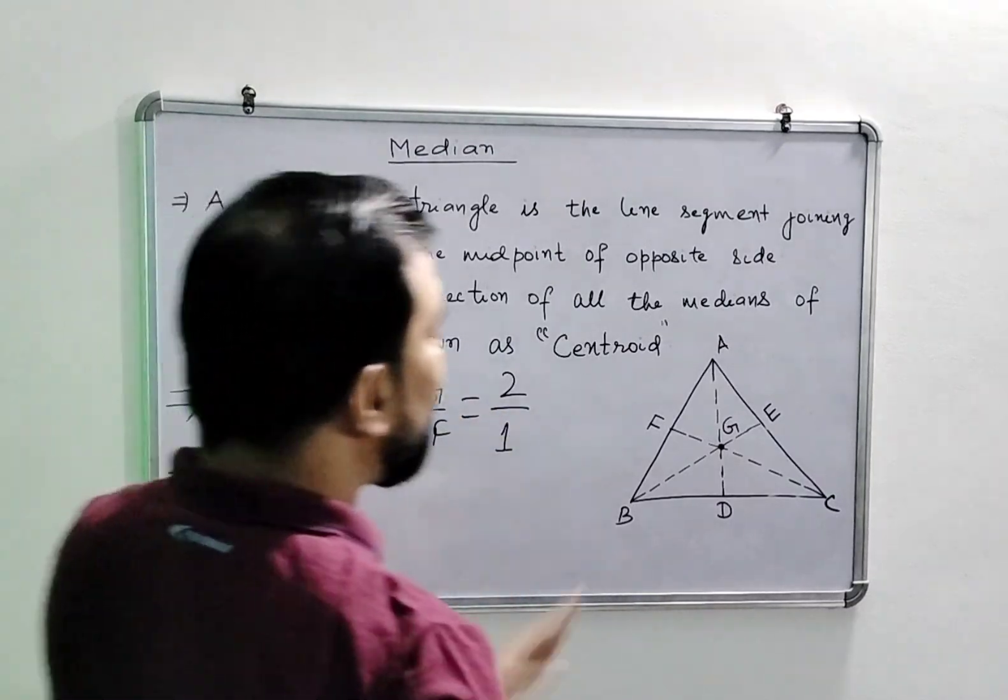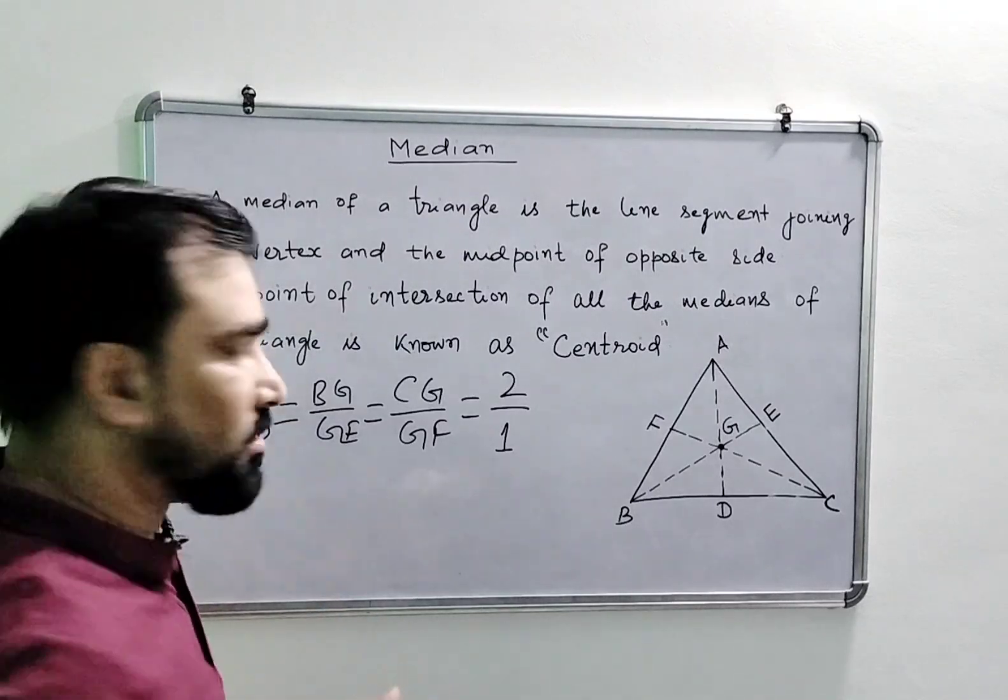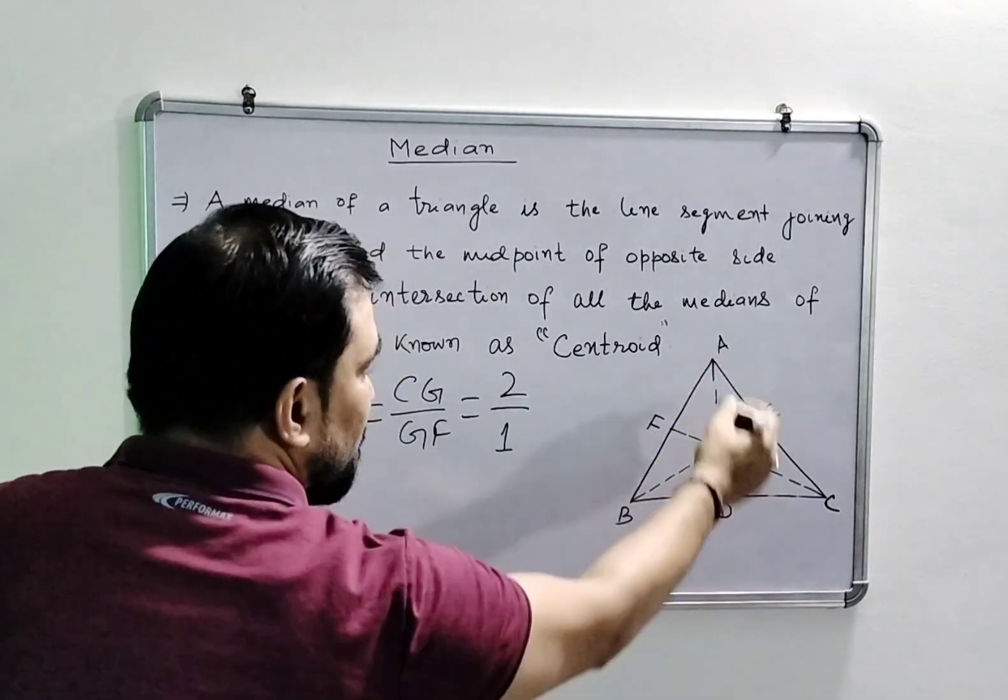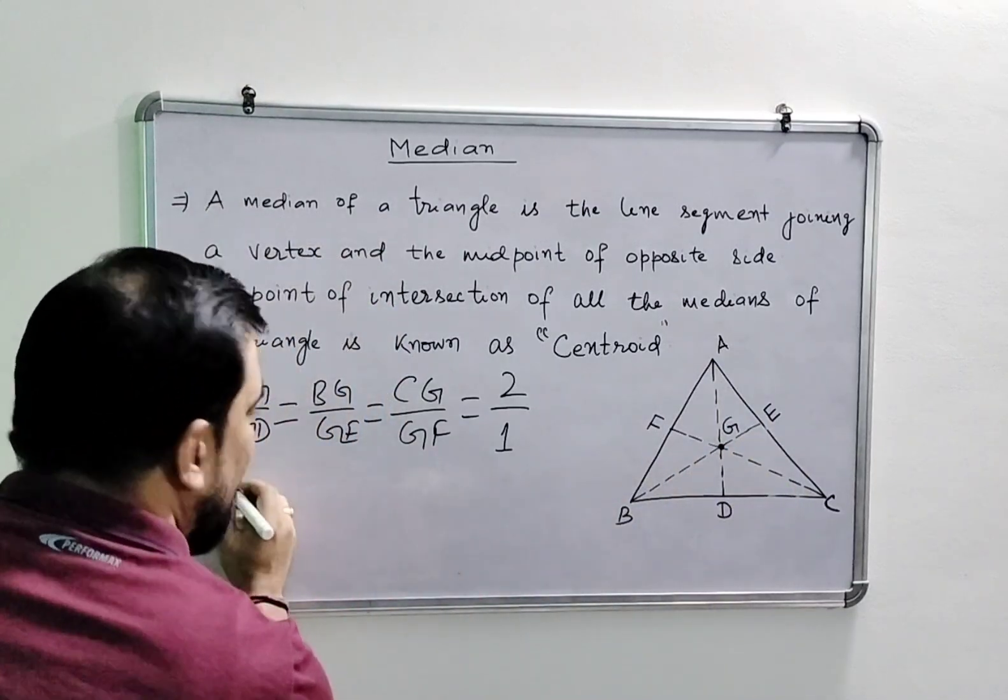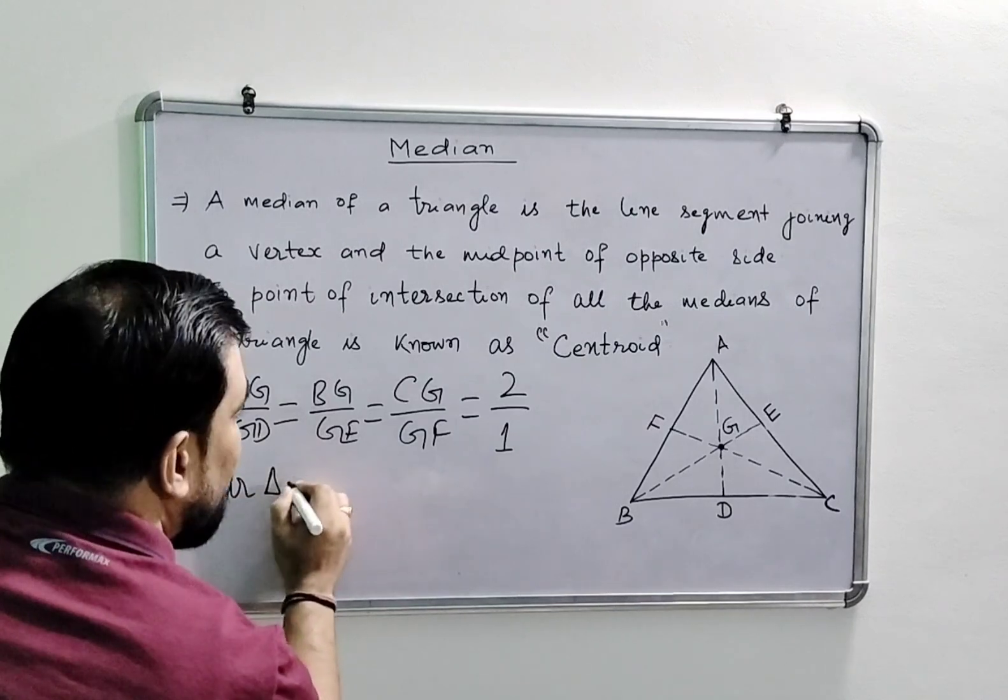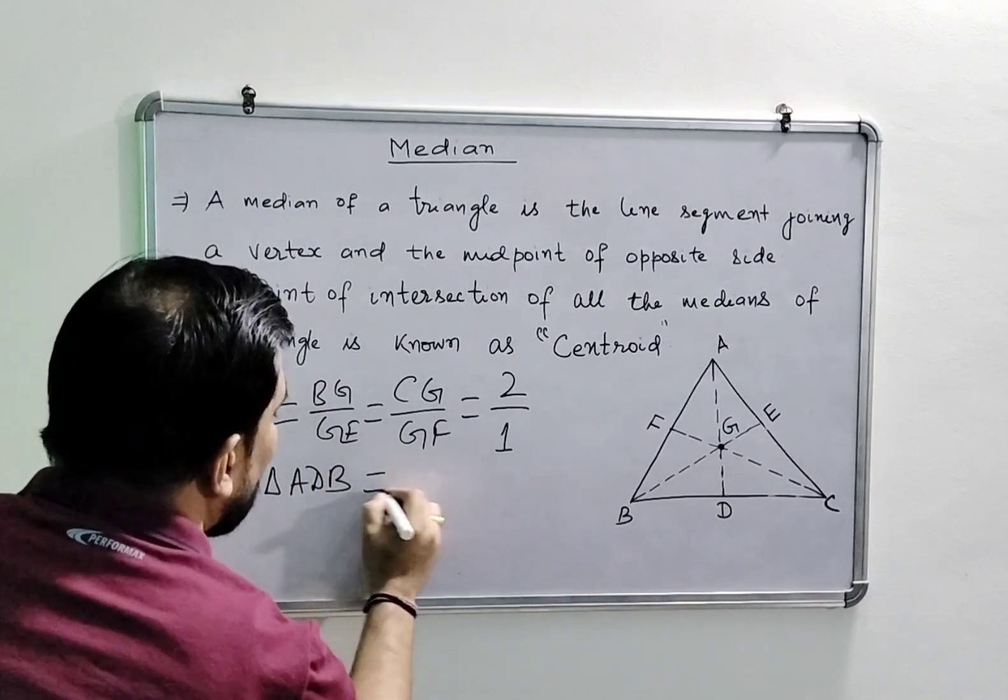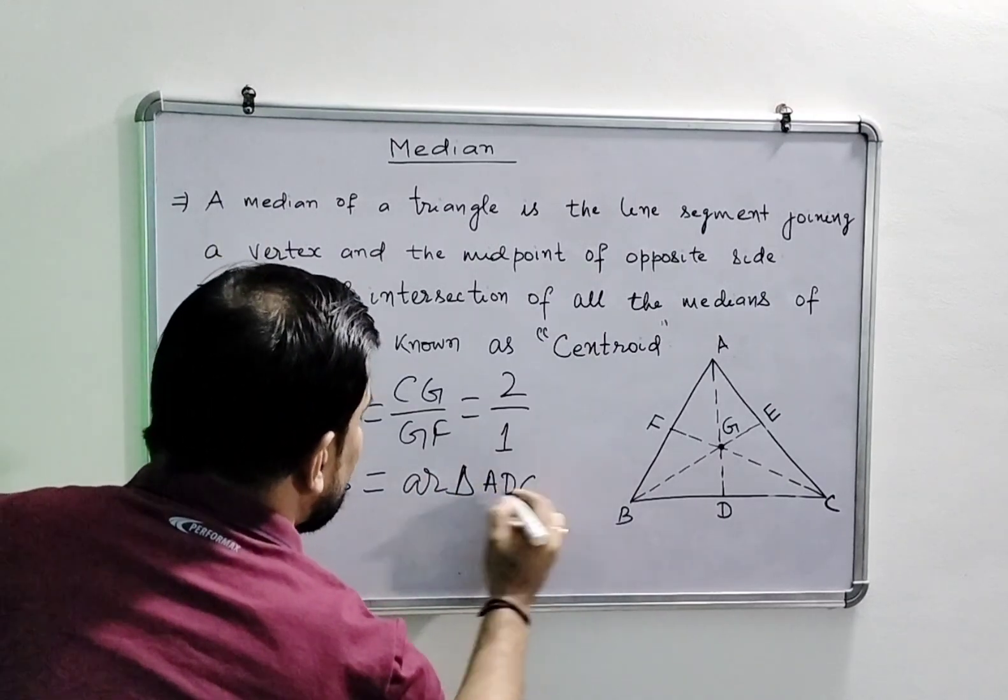Also, a median divides a triangle into two triangles of equal areas. Here, if you take median AD, it will divide triangle ABC into two triangles of equal area. So we can write that the area of triangle ADB will be equal to the area of triangle ADC.